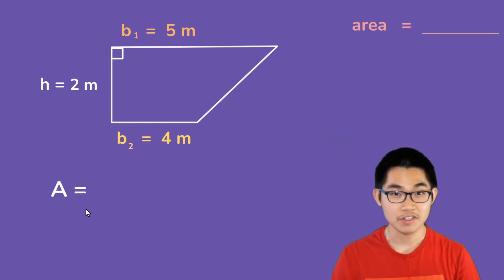And so, the area of the trapezoid is 1/2 times the first base plus the second base times the height. And so, we know that the first base is 5 meters, the second base is 4 meters, and the height is 2 meters.